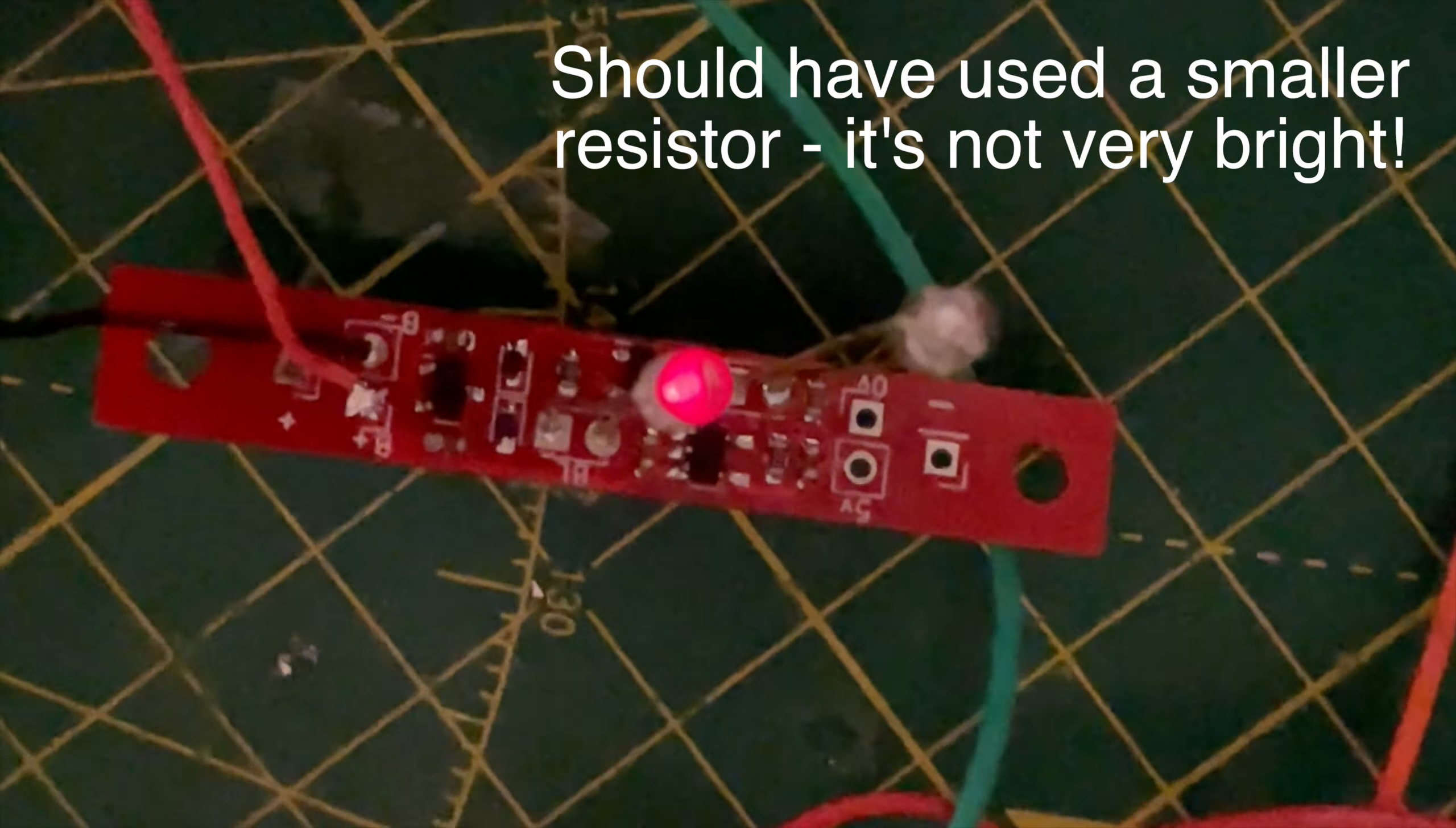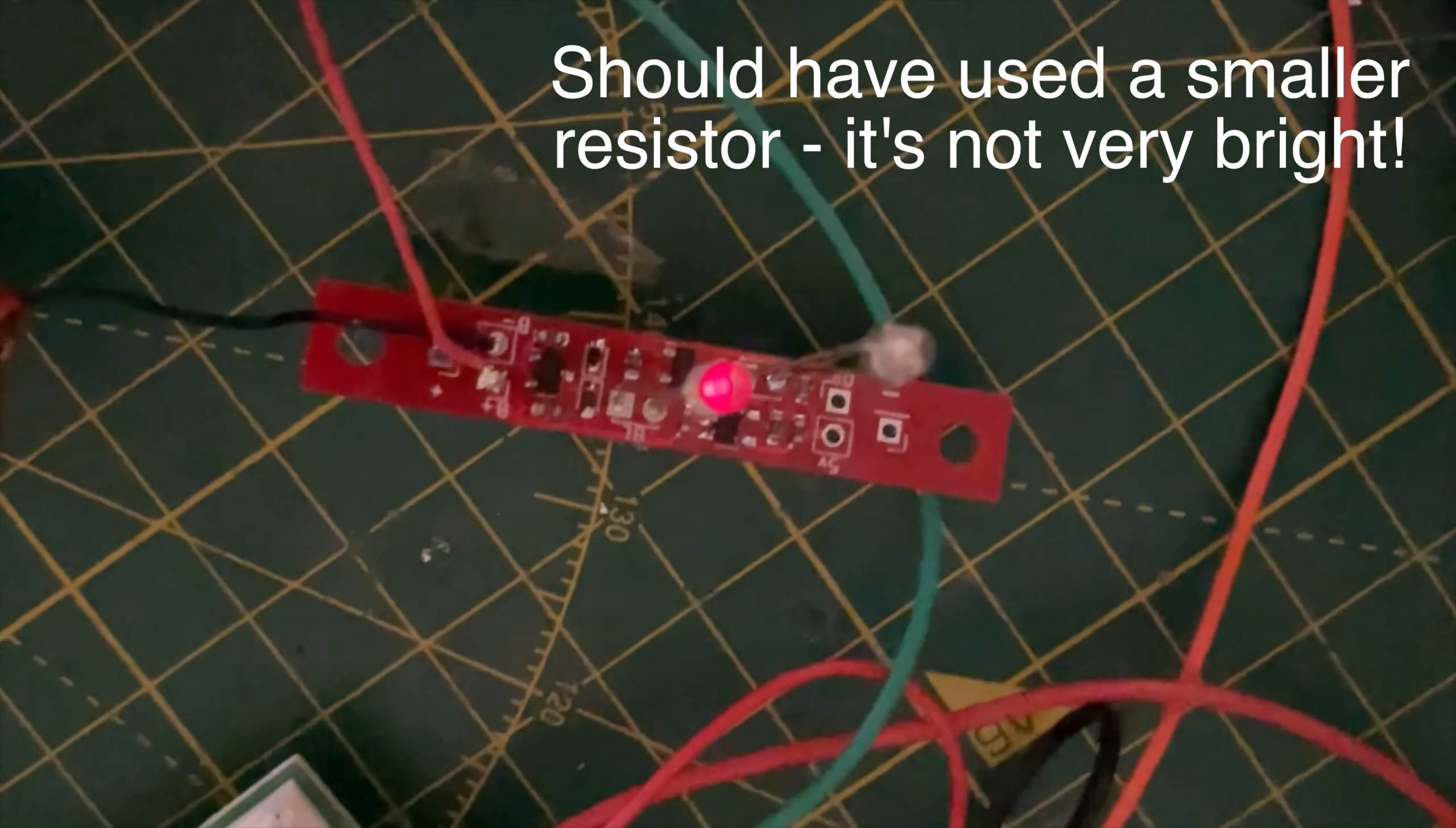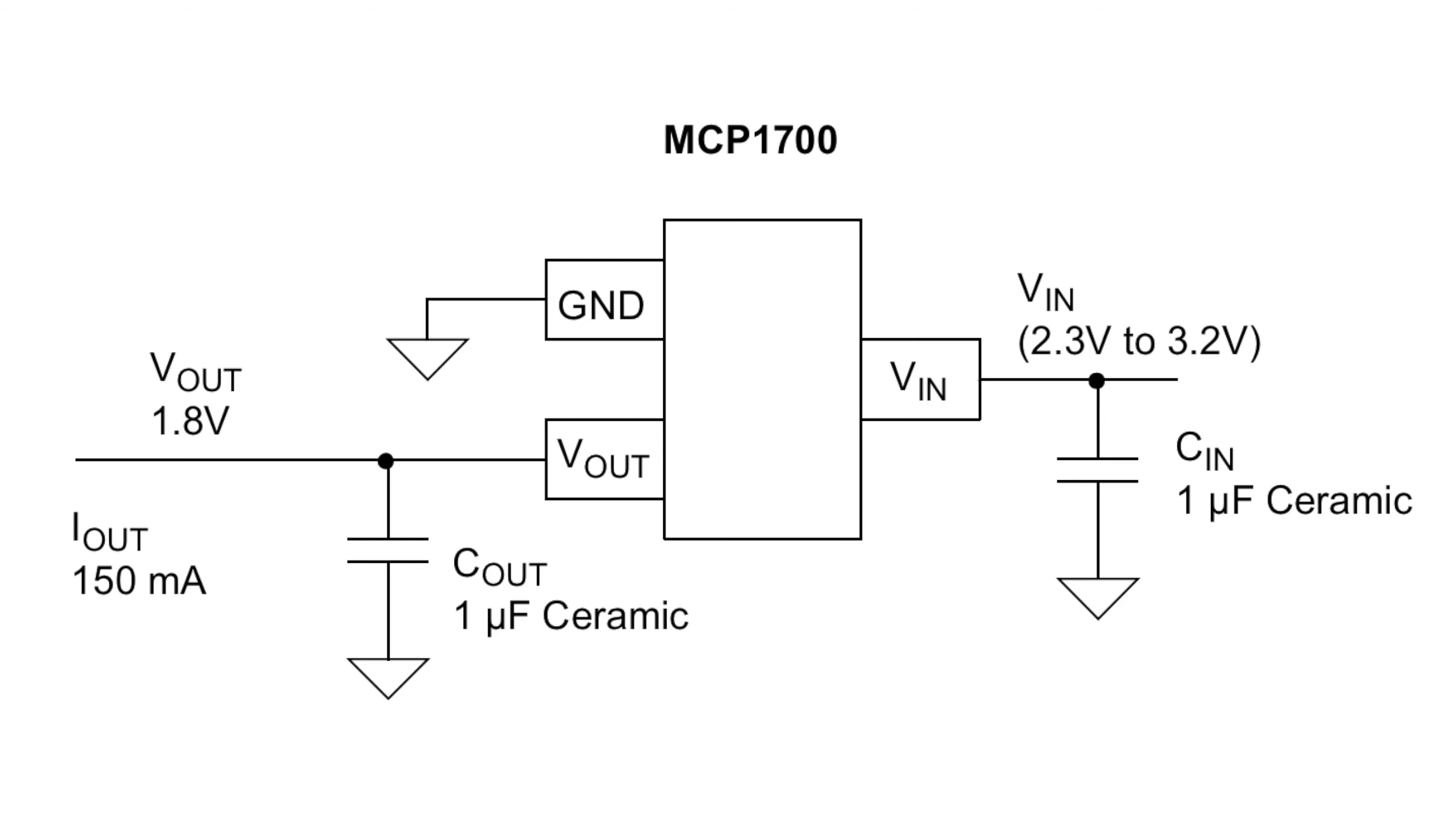I chose 3.1 volts as my threshold. I could have also used the output to disable the rest of the circuitry, maybe something for version 2 of this board. There's also a low dropout regulator, which should give us a stable 2.8 volts on the output.